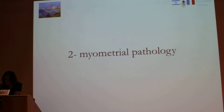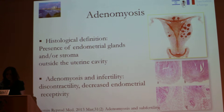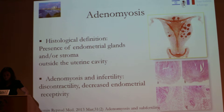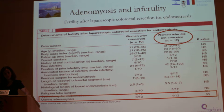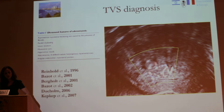The main myometrial pathology is the presence of adenomyosis — the presence of endometrial glands outside the uterine cavity throughout the myometrium. There is a strong correlation between endometriosis and adenomyosis. Women with adenomyosis show reduced conception rates. We don't know exactly what the mechanism is, but it is a factor of infertility, probably due to dysfunctional contractility of the myometrium.